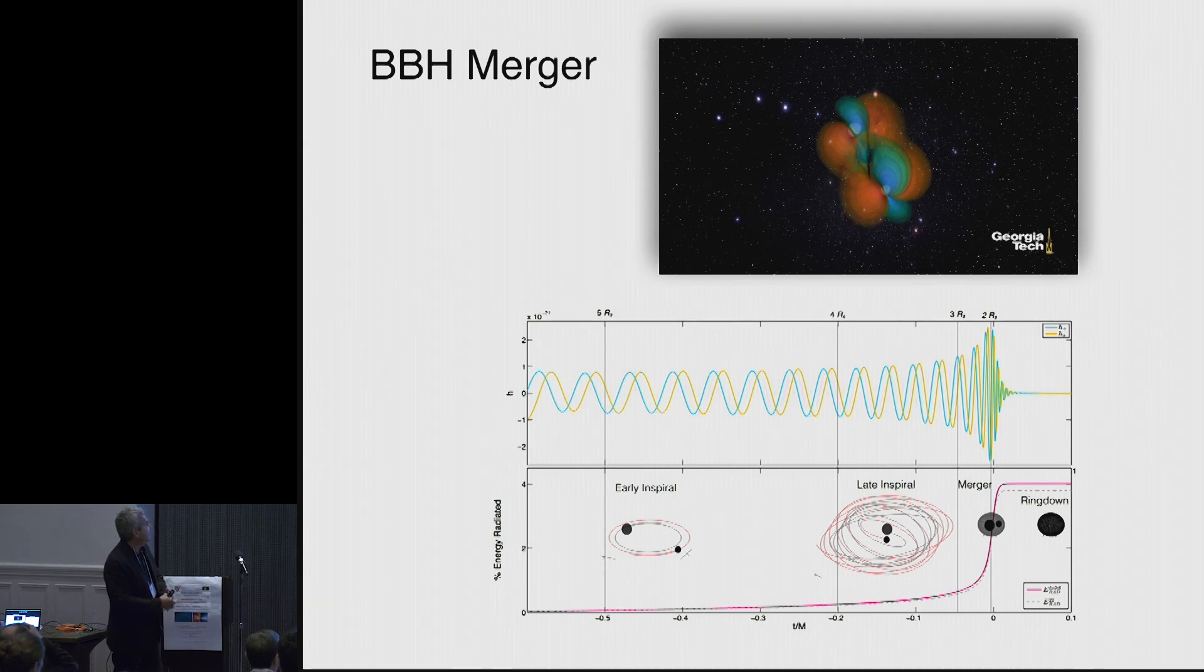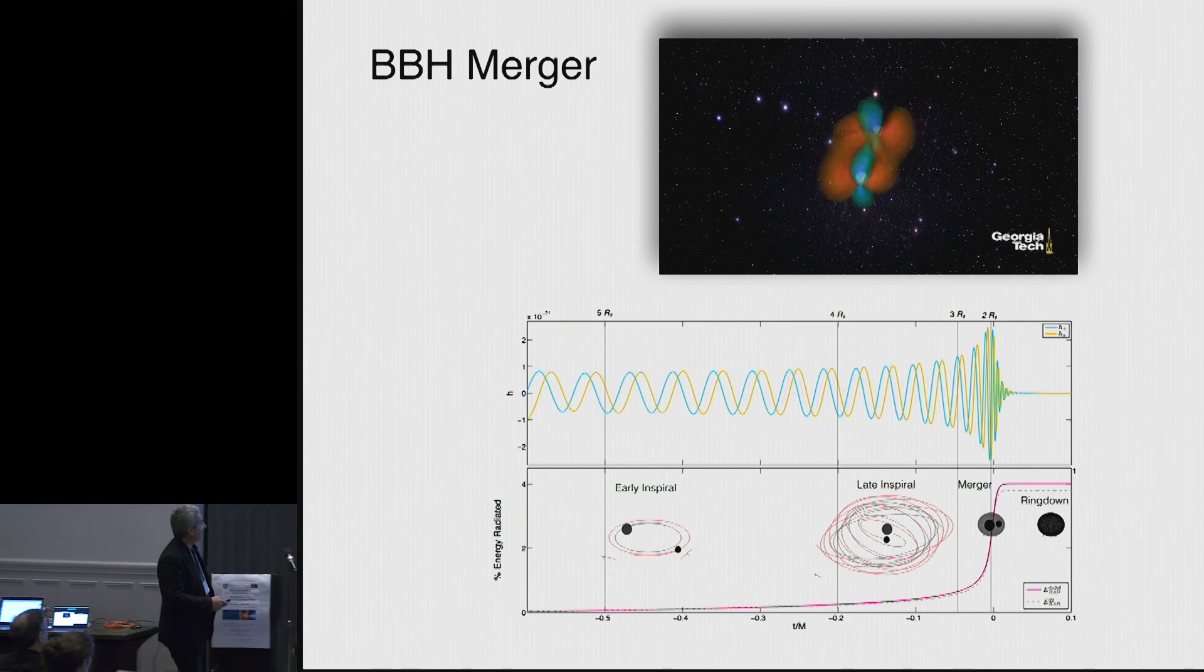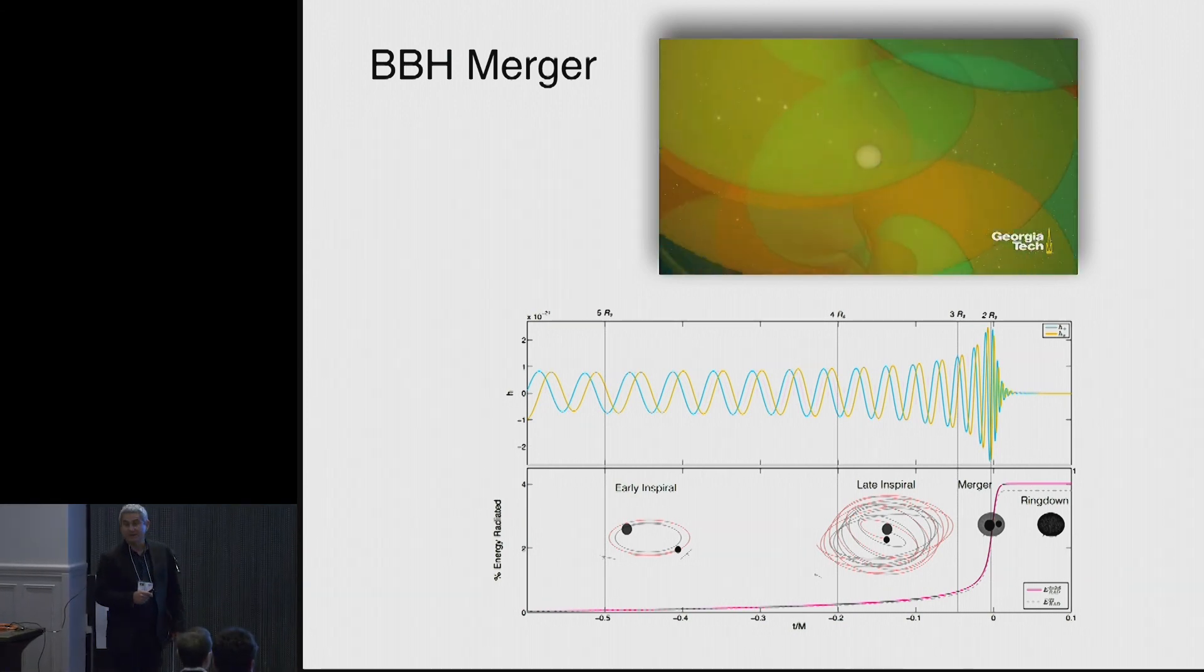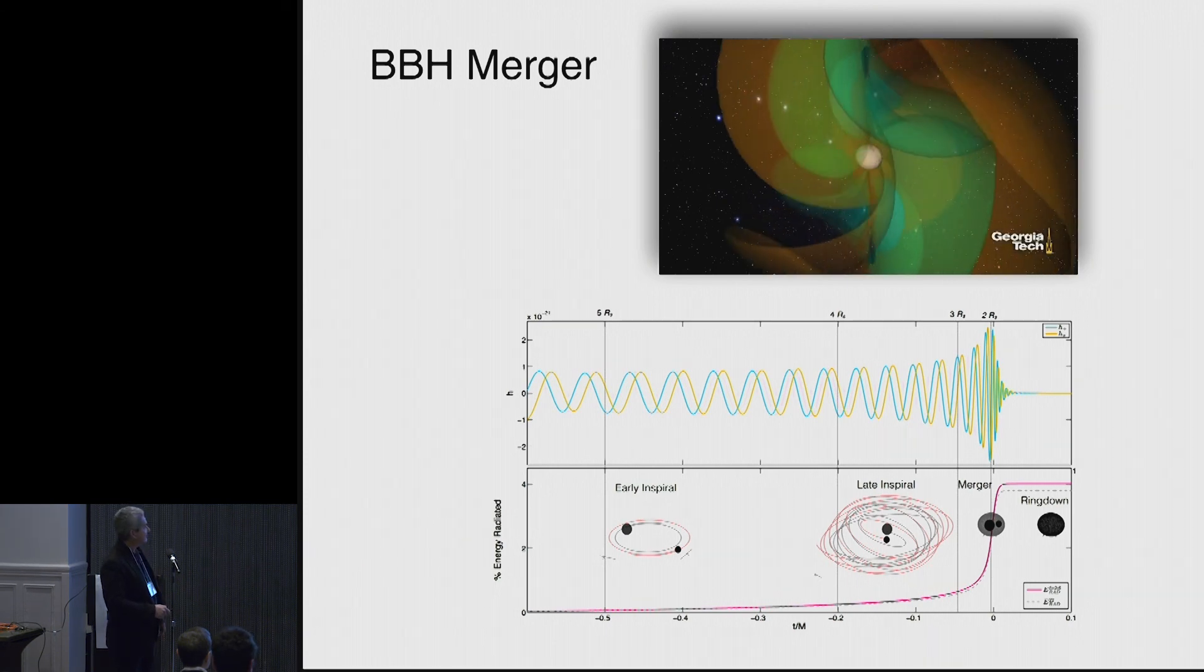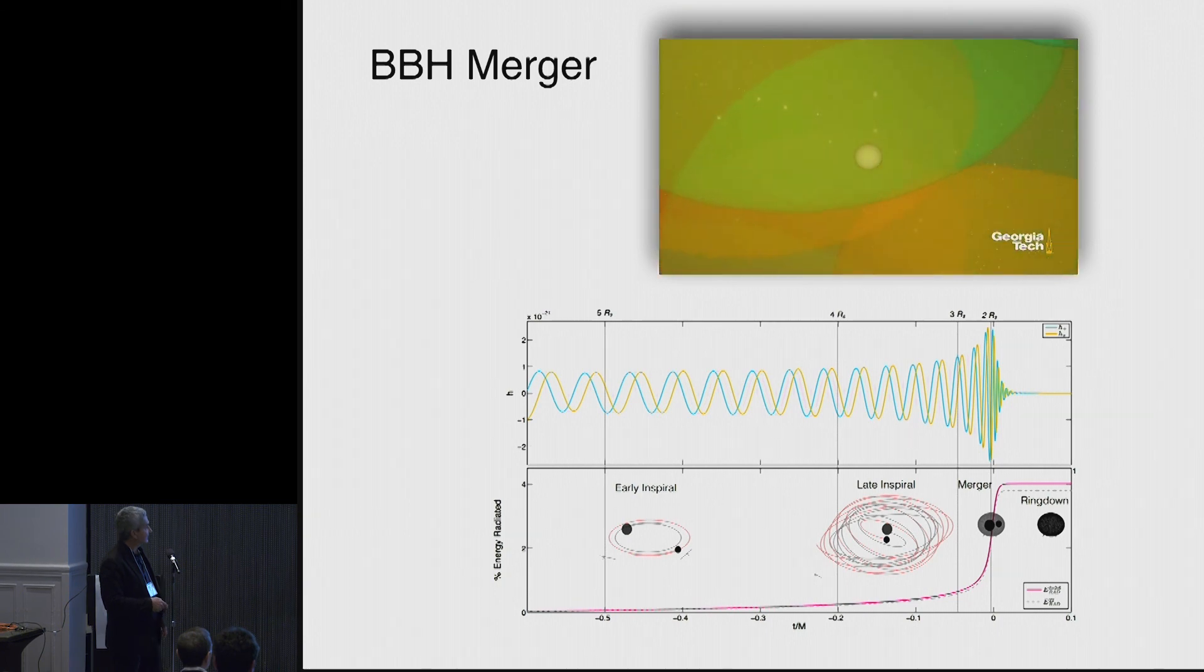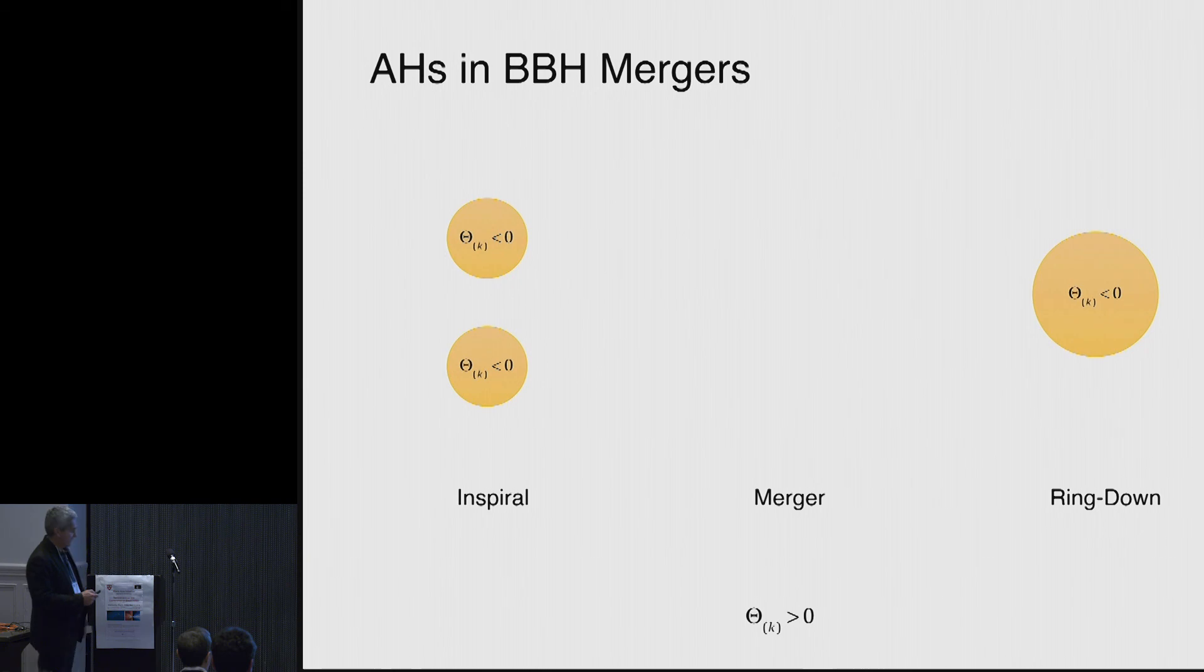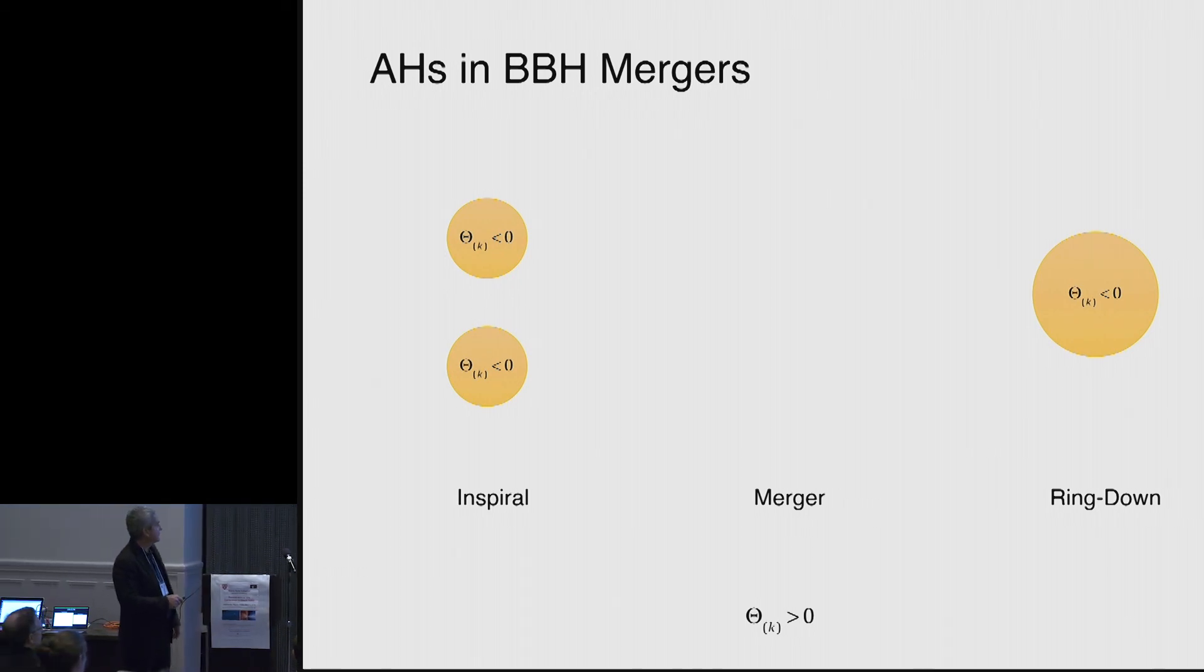All right. So now, here again is the merger. Notice again that instantaneously, there is a common horizon that appears. You can basically, it's here, when you have the latest spiral before the ring-down, you have an instantaneous common horizon appearing. So you go from a situation in which you have two apparent horizons to one in which you only have one.